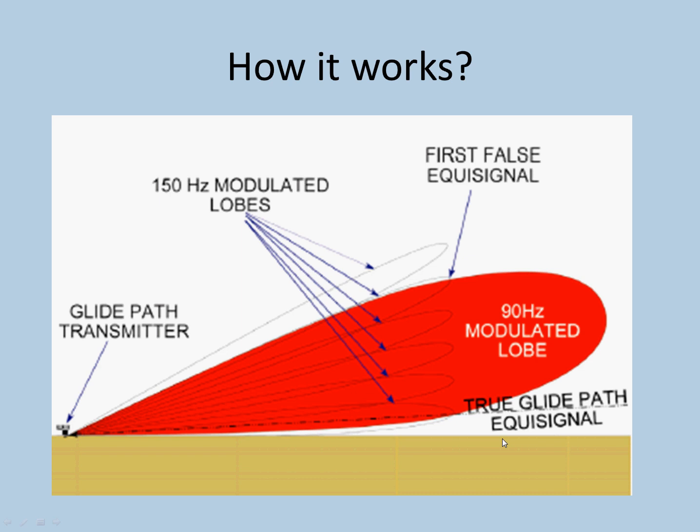There is a true glide path signal below which there will be a 150 MHz signal, and above it is a 90 Hz lobe. If the aircraft is flying above the true glide path, he will be receiving more of 90 Hz and the indication in the cockpit will ask you to go down. If he is flying below, he will receive more of 150 Hz modulated lobes and hence he will be asked to go above.